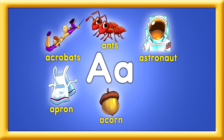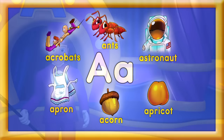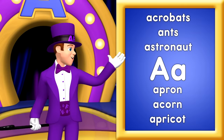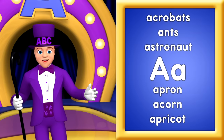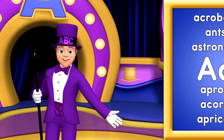Apron, acorn, apricot. Acrobat, ant, and astronaut. Apron, acorn, apricot. These are words that start with A. We've had some fun learning today.